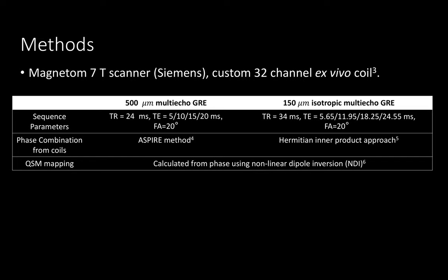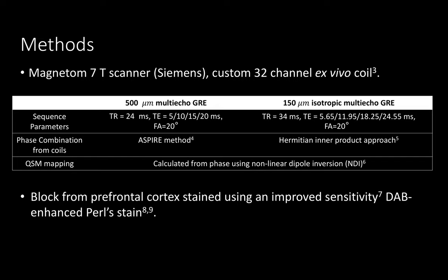We performed phase combination with the presented methods and calculated QSM for both datasets from the phase using the non-linear dipole inversion approach. To validate that the susceptibility we observe is from iron, we blocked an area from the prefrontal cortex and stained 4 micron thick slices for ferric iron using a DAB-enhanced pearl stain with improved sensitivity.